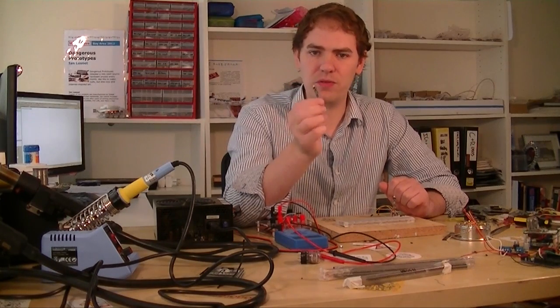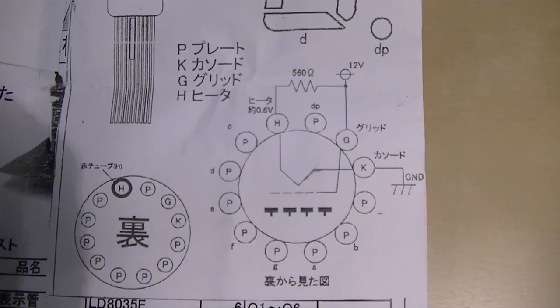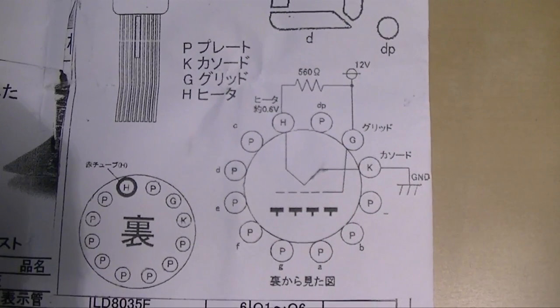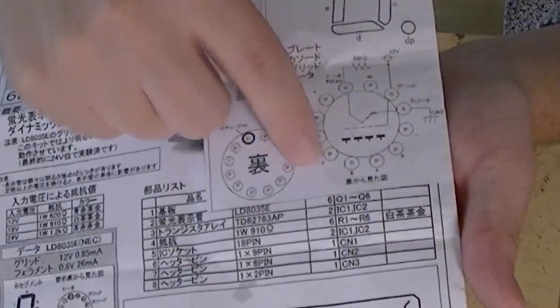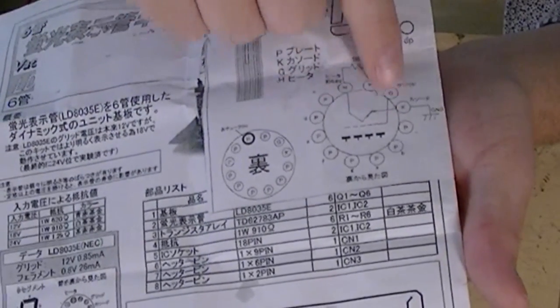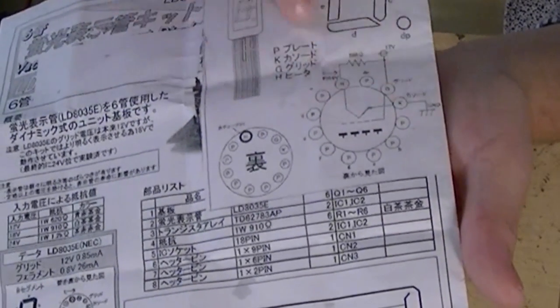These only need a single 12 volt supply. Take a look at this data sheet. The data sheet is in Japanese but you can probably get the gist of it. Here's the pin out for the VFD tube. It takes a single 12 volt supply through the grid. Then this is called the filament through here.